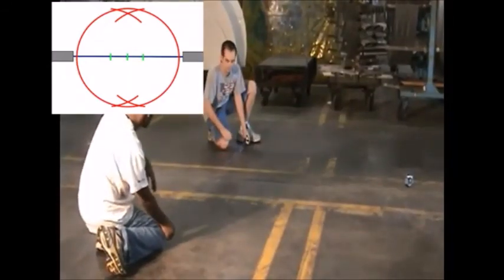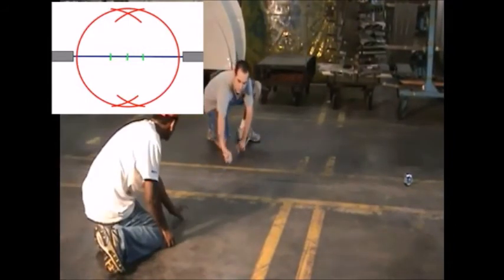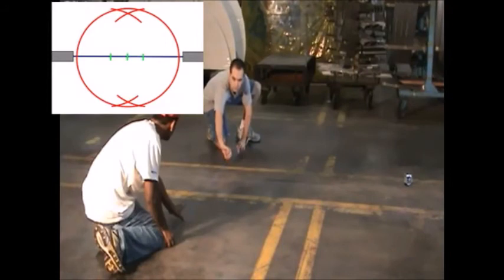Snap a chalk line between the two sets of arcs. You now have a line that is exactly perpendicular to the center line drawn earlier.